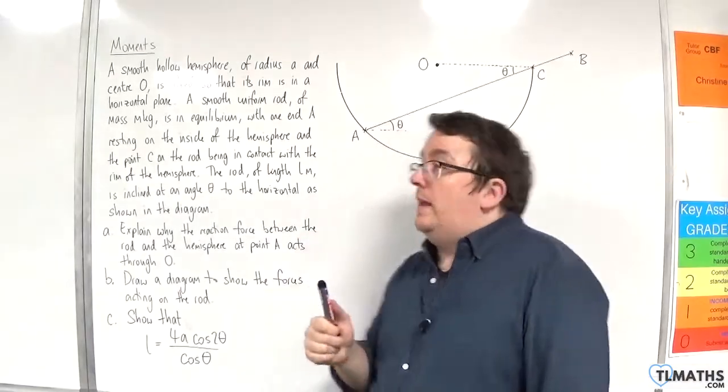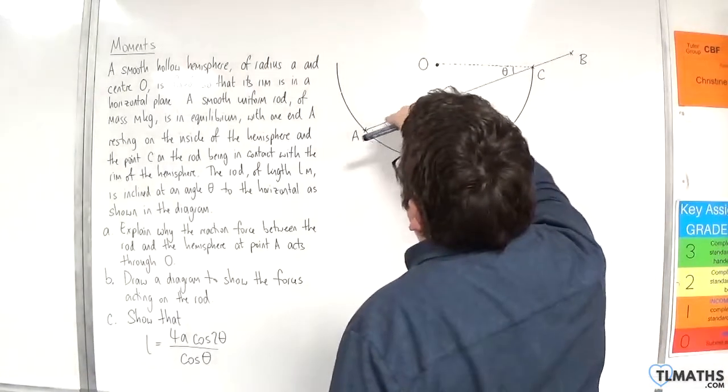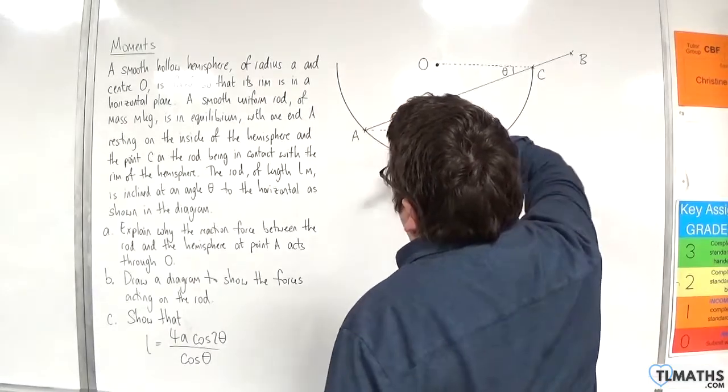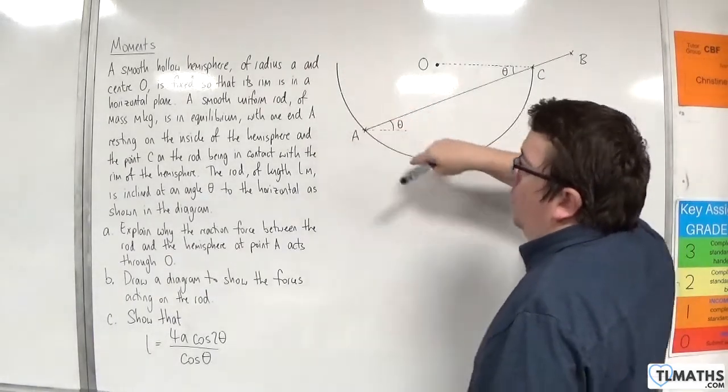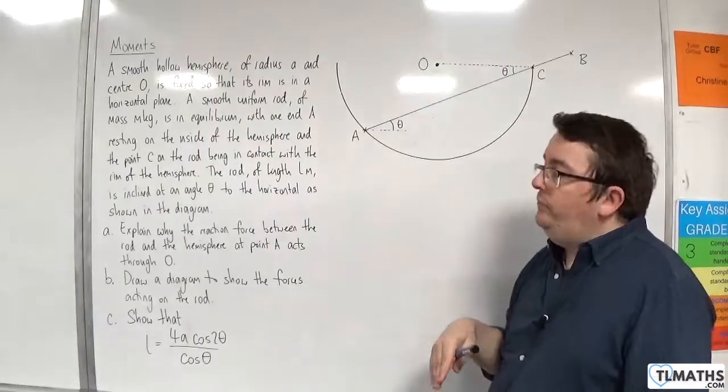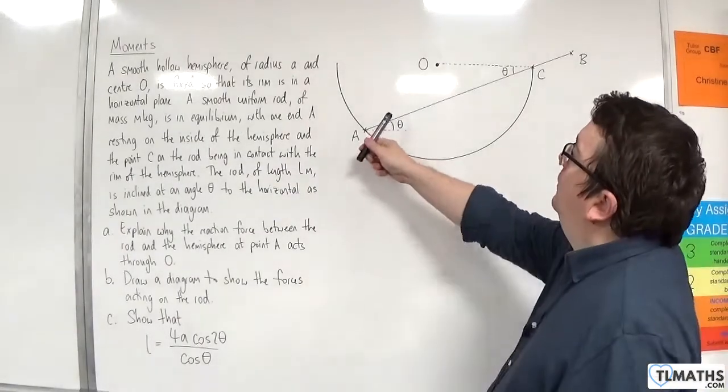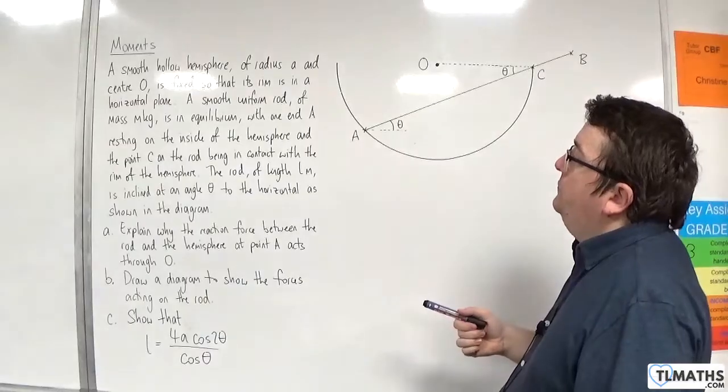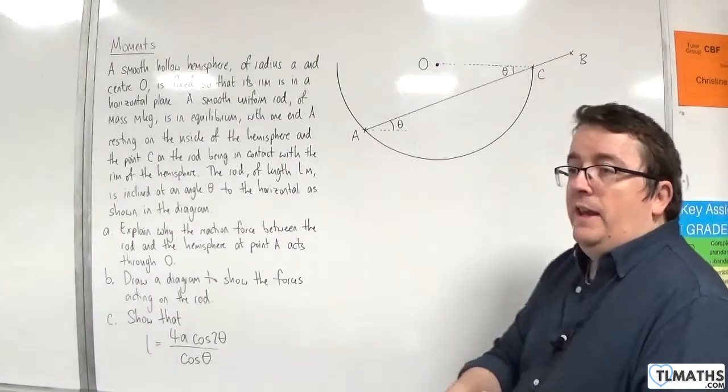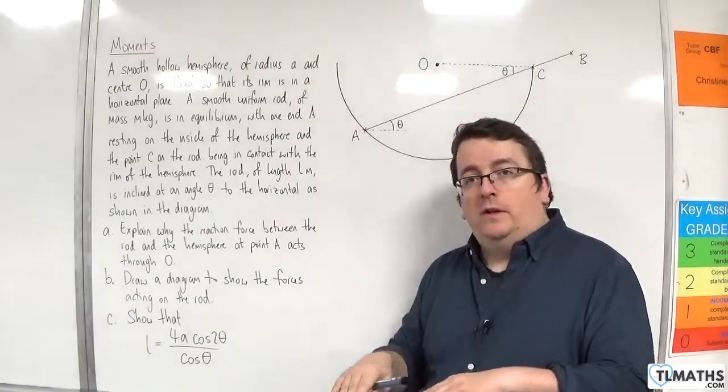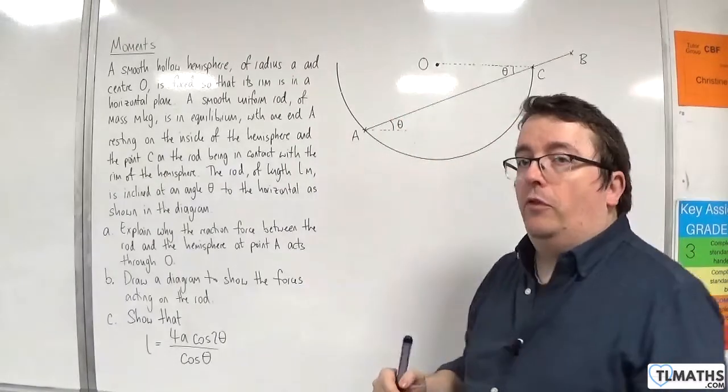So the reason for this is that the hemisphere is smooth. Because it is smooth, the rod could move in either direction and the direction of its motion will be round the inside of the hemisphere. The line of action that's perpendicular to that will be the normal, which is going to go through the center of the circle. The normal reaction will be perpendicular to the direction of motion, and perpendicular to that is the normal which will go through the center.